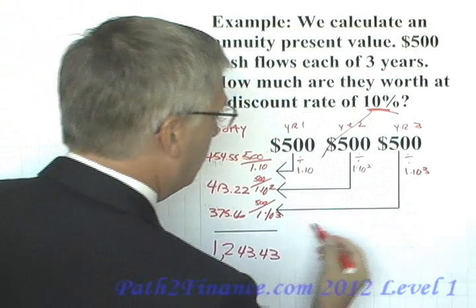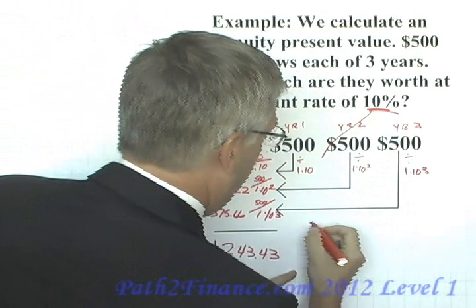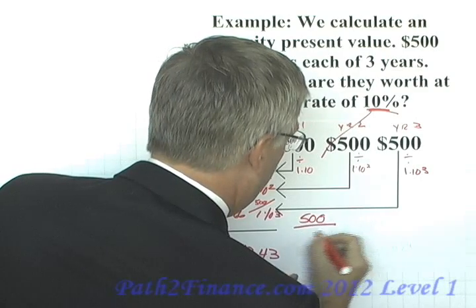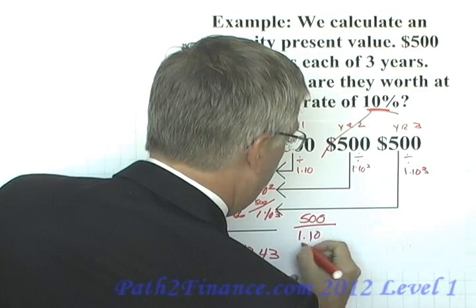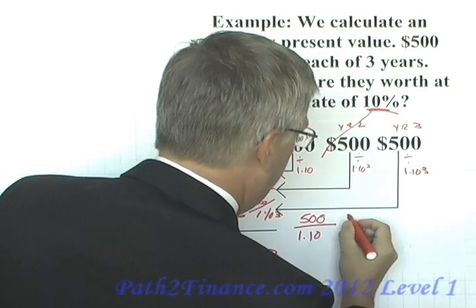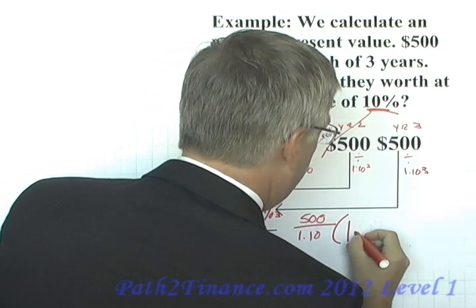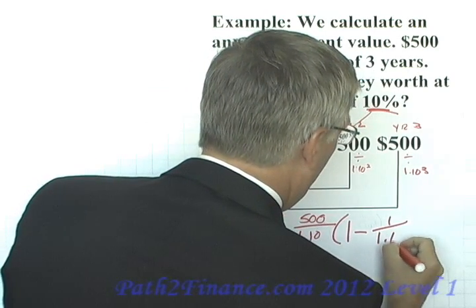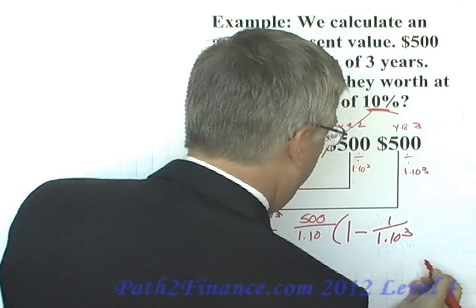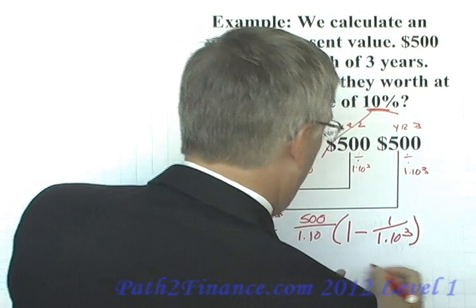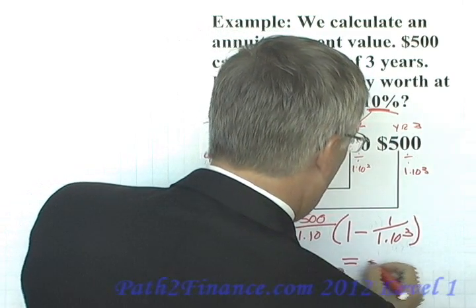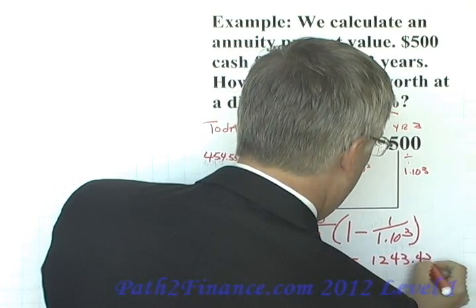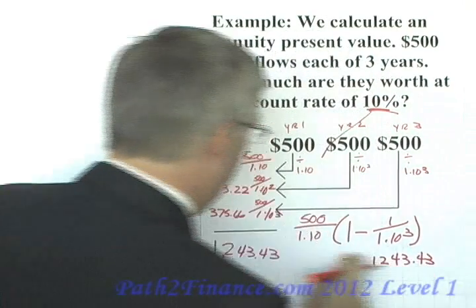That's a simple way of doing it individually. However, we can use our formula for the total: $500 divided by 0.10, times 1 minus 1 over 1.1 to the power of 3 — and that comes out to the exact same number.